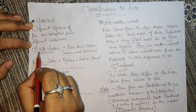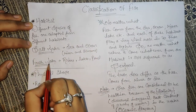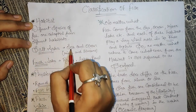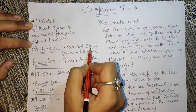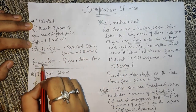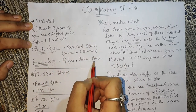So here we have salt water and fresh water. In salt water we have seas and oceans, and in fresh water we have rivers, lakes, and ponds.